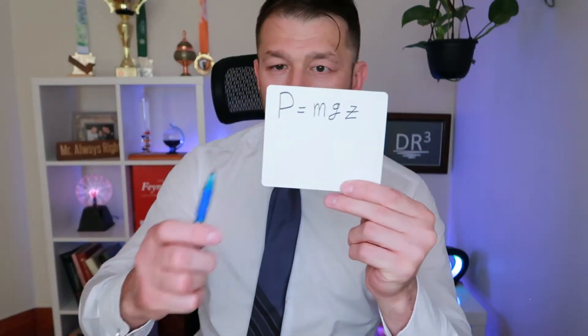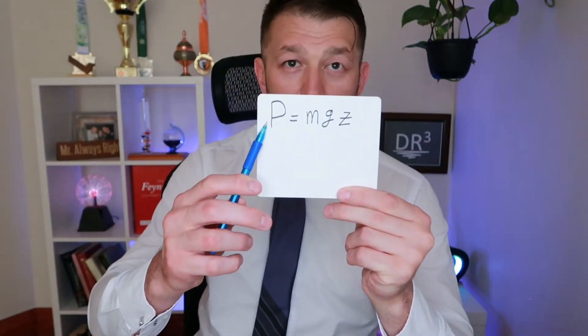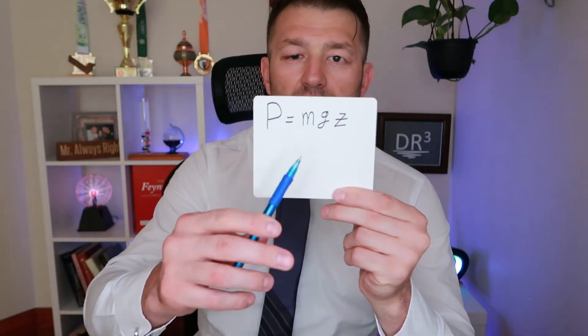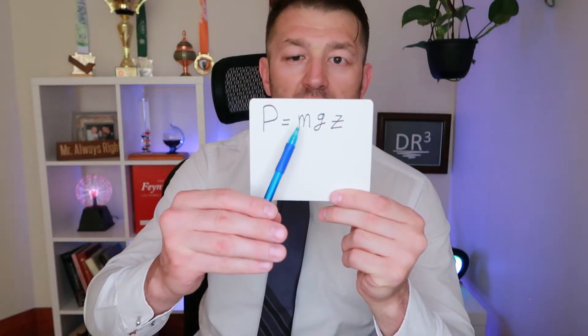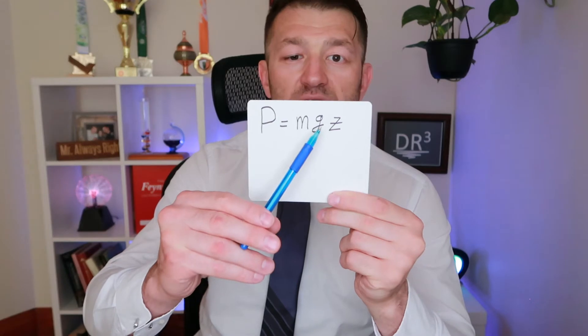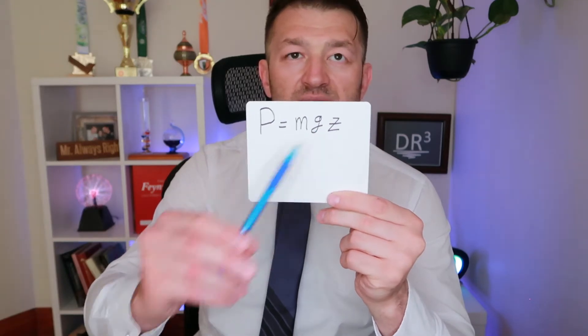Geopotential is highly related to potential energy, so let's first briefly discuss potential energy. Potential energy is expressed as P equals mgz. M is mass of a particle or a parcel of air, g is gravitational acceleration, and z is height in respect to some reference level.